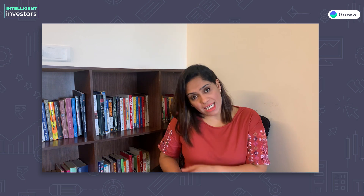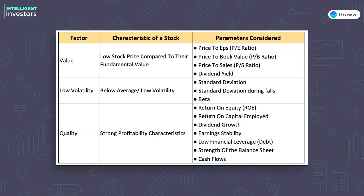Smart beta funds do not consider market cap as the primary underlying factor. Instead, they consider other factors when selecting stocks, such as P/E ratio, dividend yield, book value, cash flows, etc. Using these metrics, you can analyze stocks and group them into different factor buckets, such as value, momentum, quality, and volatility buckets.